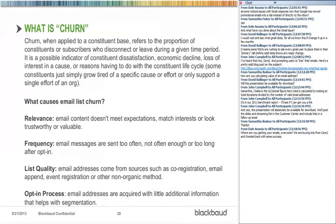Back to churn: when applied to a constituent base, this refers to the proportion of constituents or subscribers who disconnect during a given time period. Causes include constituent dissatisfaction, negative news events, economic decline causing guilt around donation appeals, lost interest in the cause, or simply the life cycle coming to an end. Some constituents only support a single effort — like your Team Raiser event — and unsubscribe after that event.